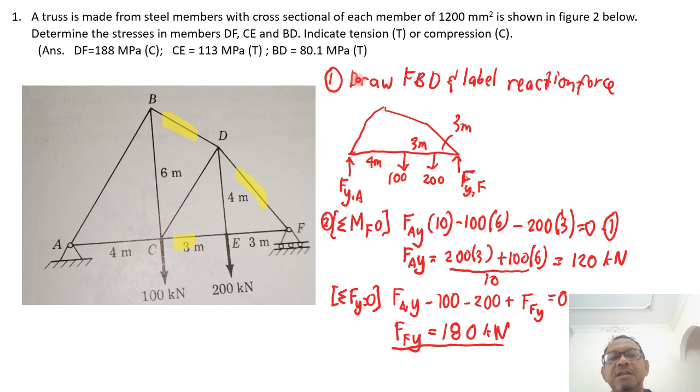And this is shown in figure below. Determine the stresses in members DF, CE, and BD. Indicate tension T or compression C. So when you have problem like trusses, of course, it started with you finding the reaction force for the support. Okay, so that is obtained by using the free body diagram. So I draw a free body diagram and I label the reaction force. So I've got reaction force at A, which is FyA, and reaction force at F, FyF.